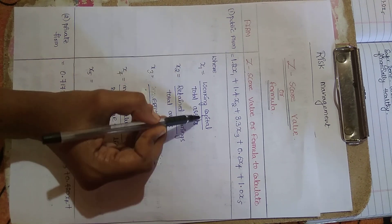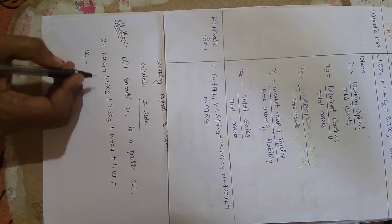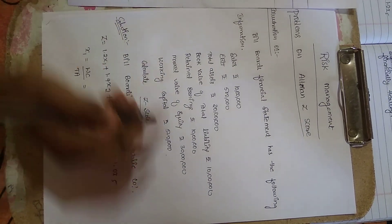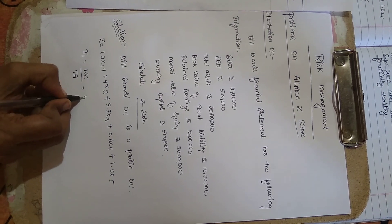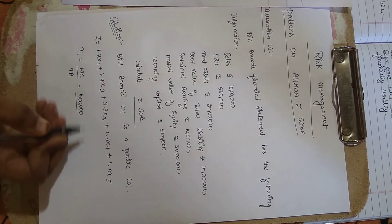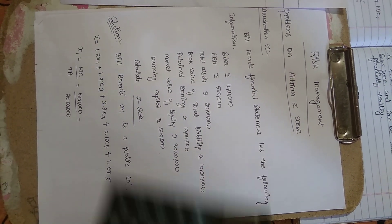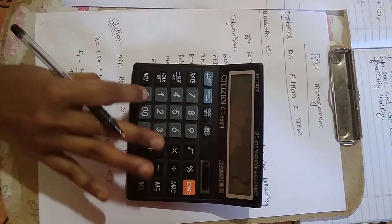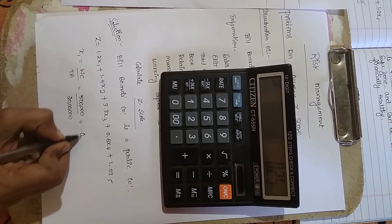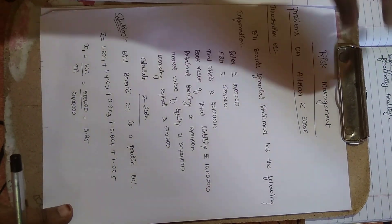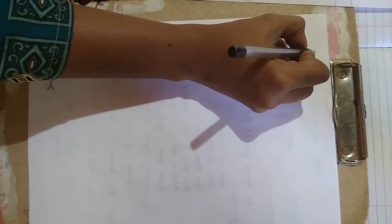X1 equals working capital divided by total assets. Working capital given here is 5 lakhs, total assets is 20 lakhs. So 5 lakhs divided by 20 lakhs — the answer is 0.25.